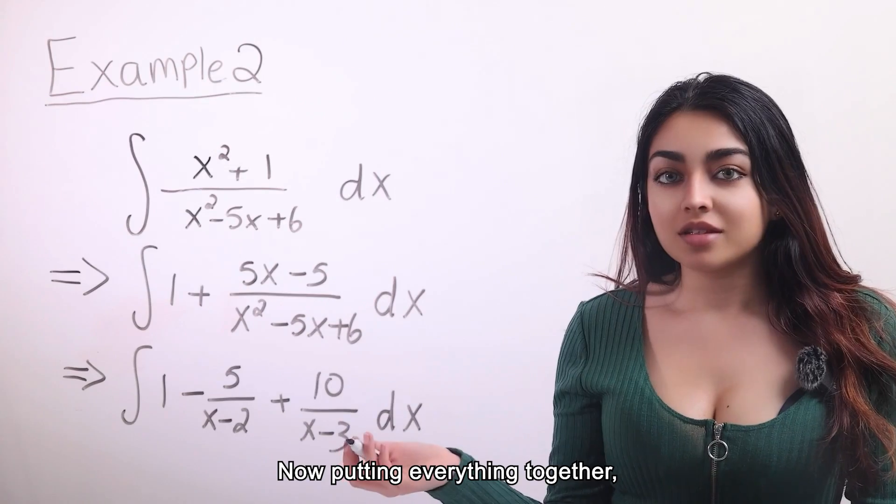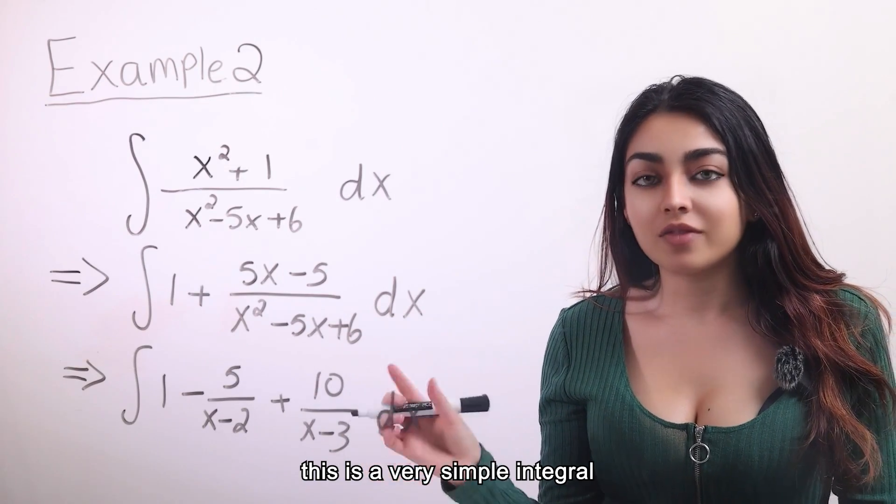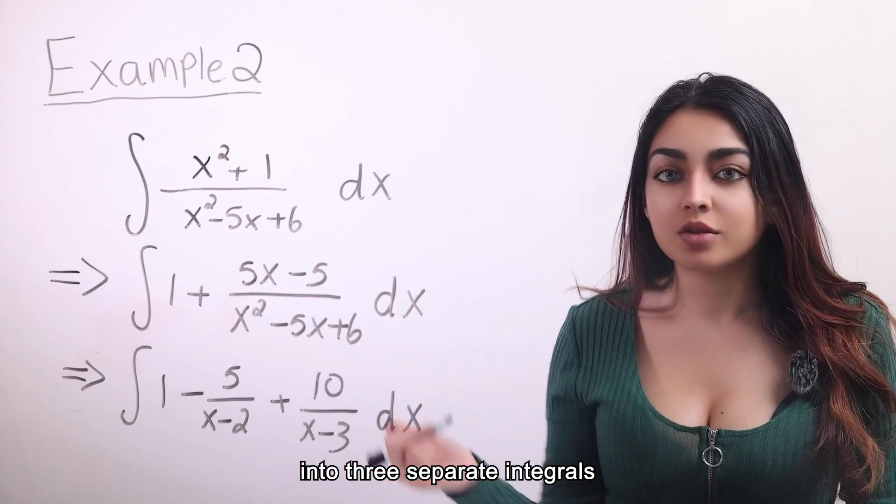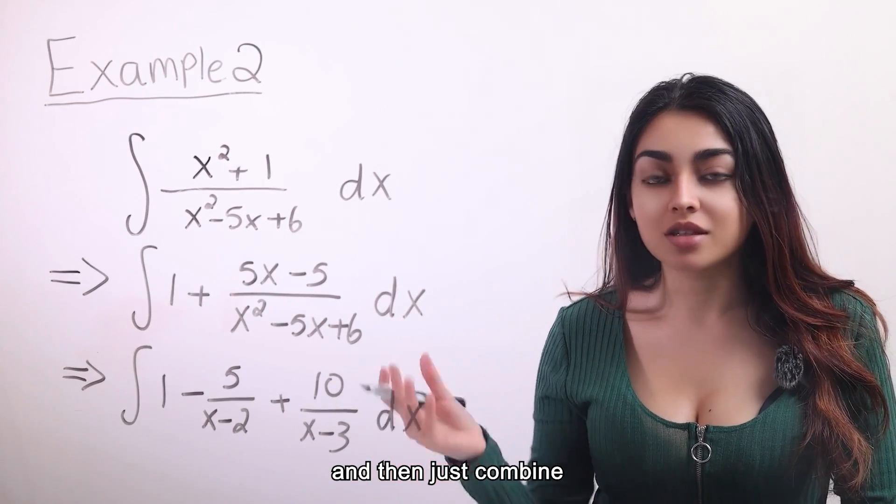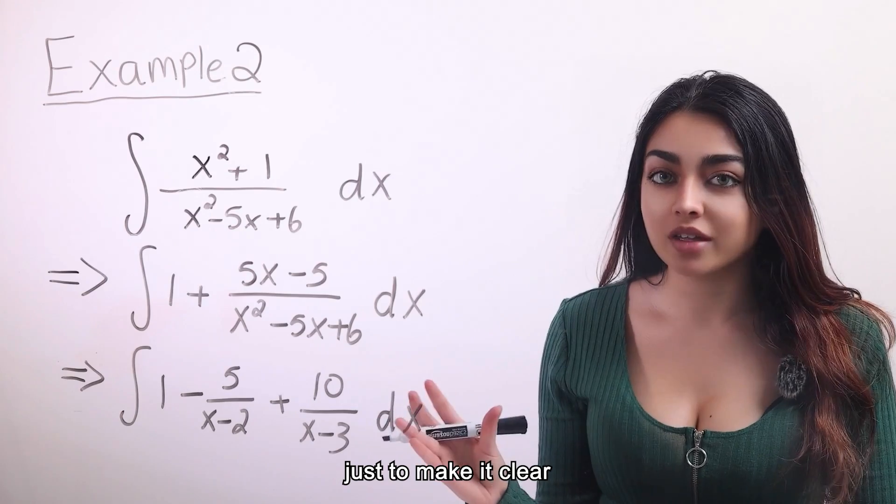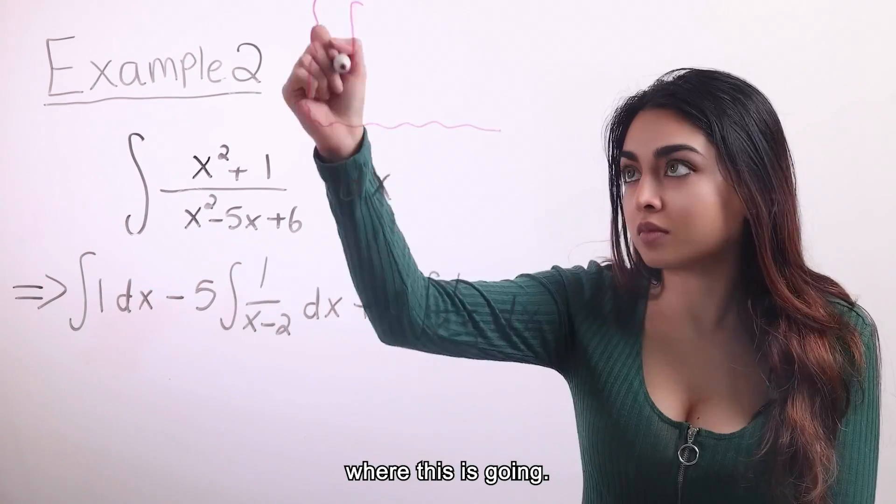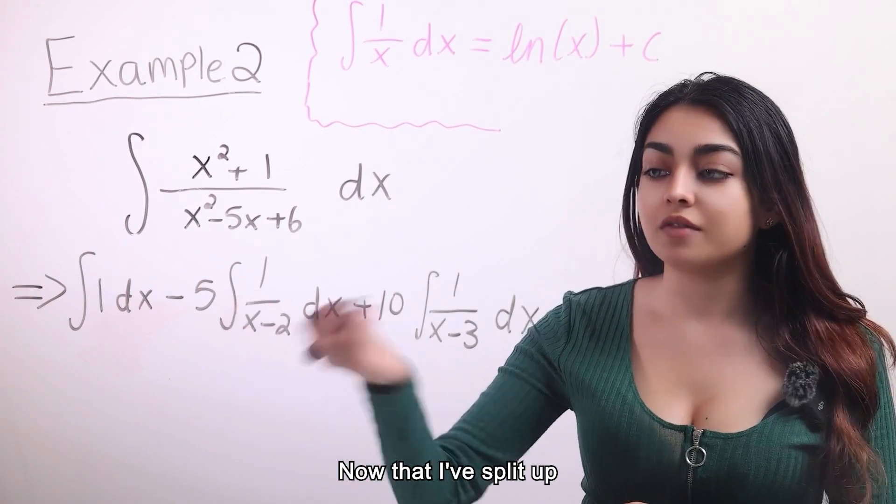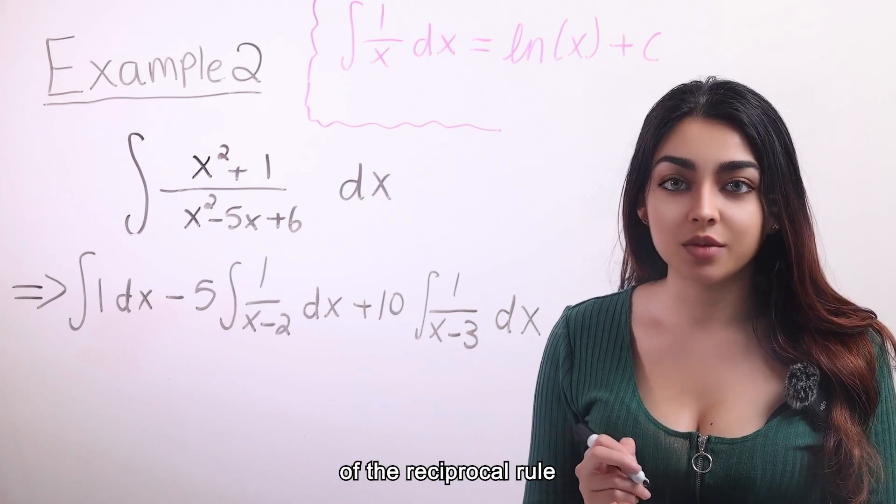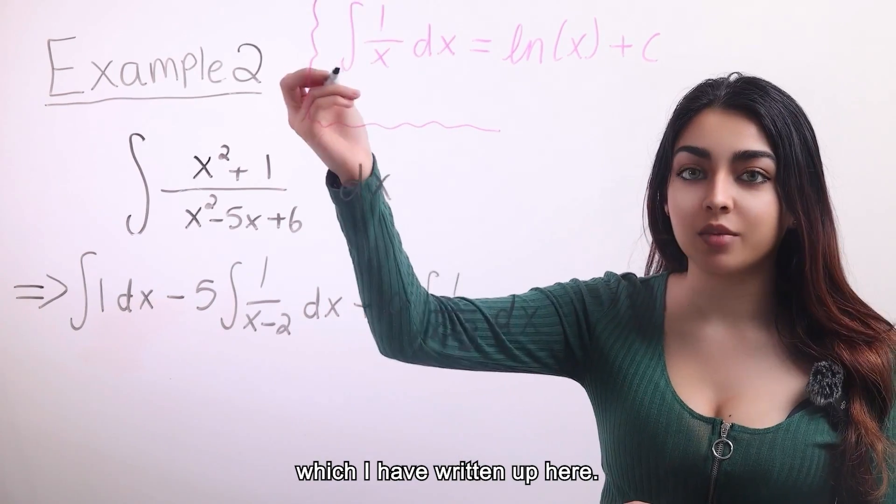Now putting everything together, we can see that this is a very simple integral to solve. We can split it up into three separate integrals and then just combine the results. I'll also pull out the constants just to make it clear where this is going. Now that I've split up the integral, I also wanted to remind you of the reciprocal rule which I have written up here.